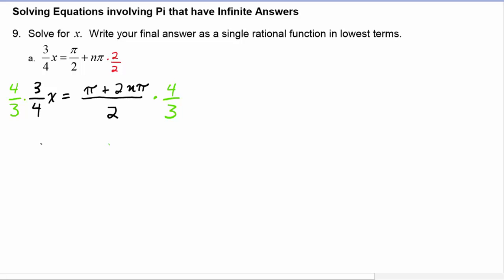The left hand side becomes x. On the right hand side, two goes into two once, two goes into four twice, and then we have to distribute that two to the numerator. So we will get two pi plus four n pi divided by one times three, which is three.